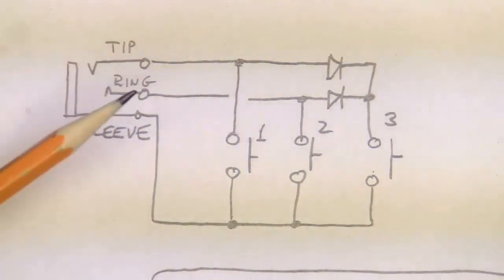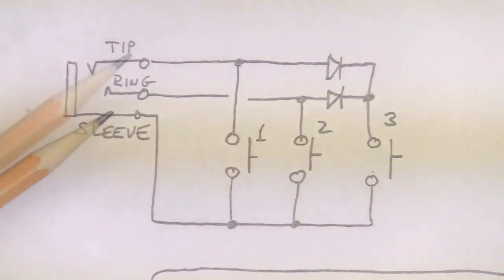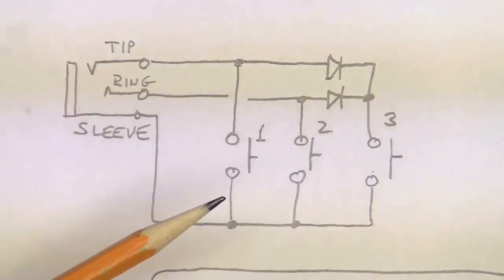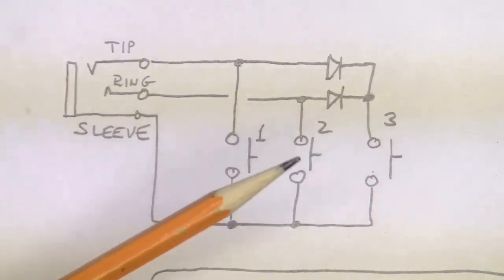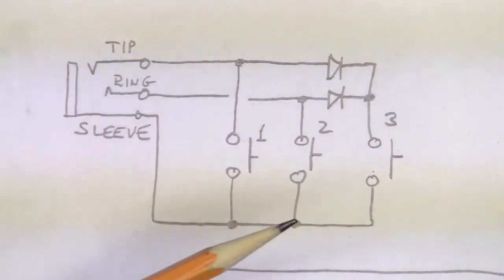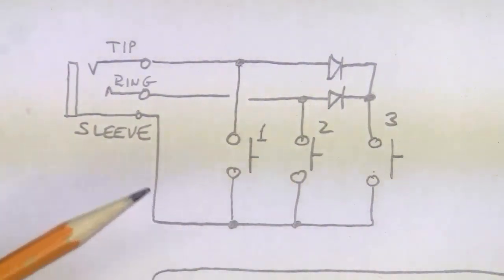And you notice it has a tip, a ring, and a sleeve. The tip goes to switch one directly. The ring goes to switch two directly. And all three switches have a common connection to the sleeve.